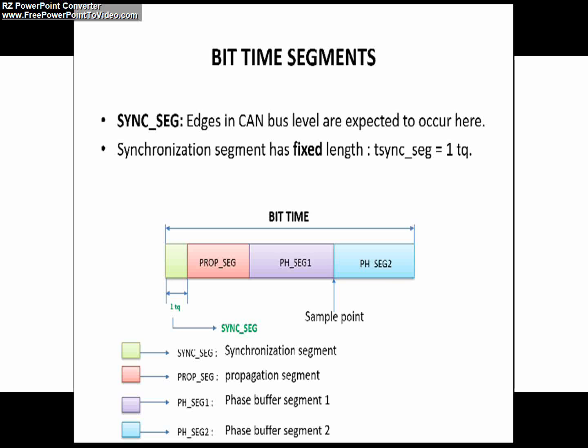Following synchronization of transmitter and receiver, the transmitter starts sending its frame bit by bit. For proper interpretation of the bit, the bit edges are expected to occur in the synchronization segment appropriately.